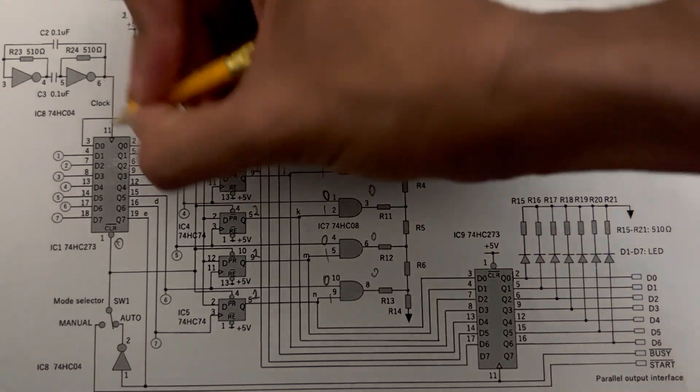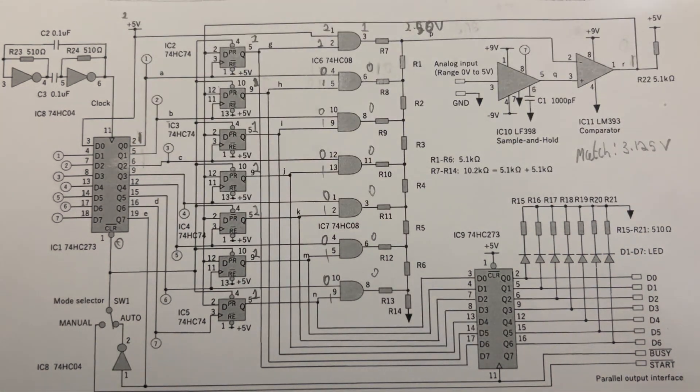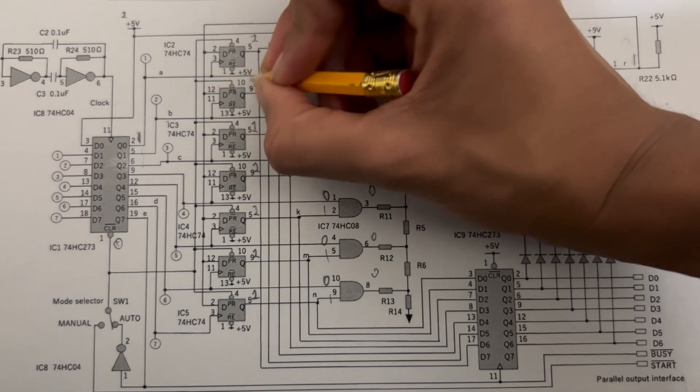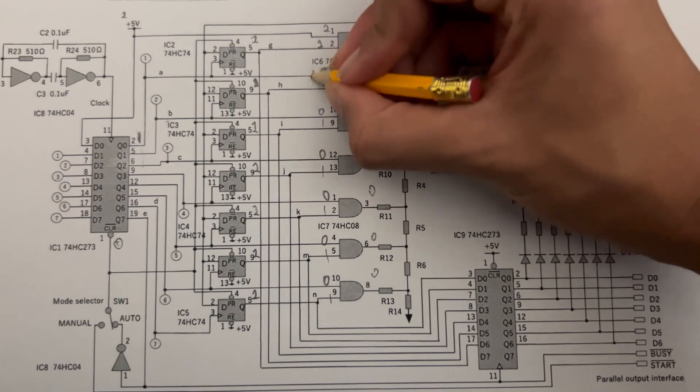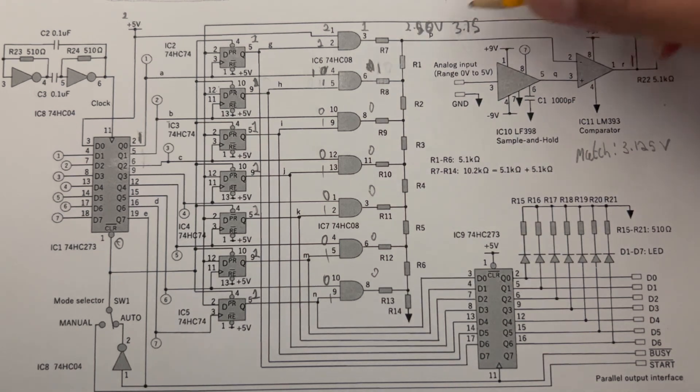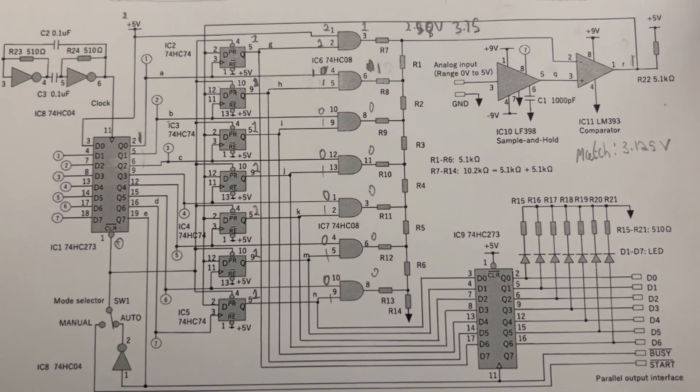For the next clock cycle, Q0 becomes high, and the second flip-flop's Q value is 1, making the output 1. Now, the new voltage goes from 2.5 to 3.75. This is more than 3.125 that we're looking for, which causes the feedback to be low.